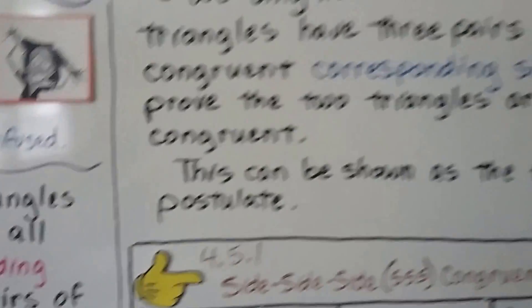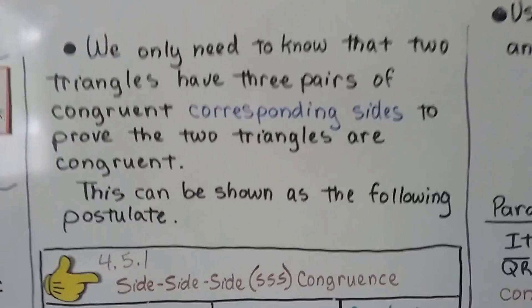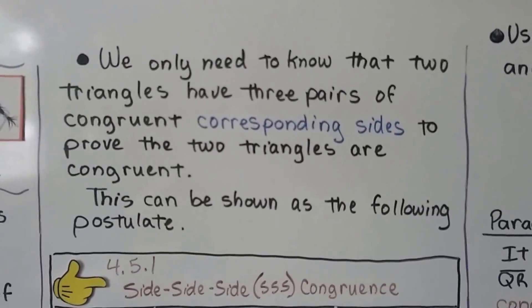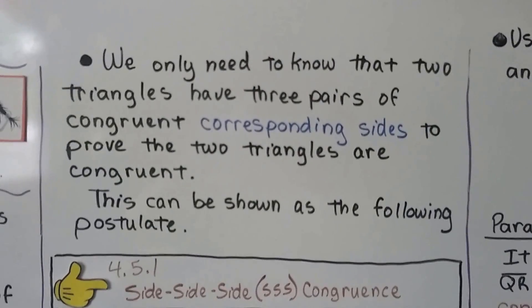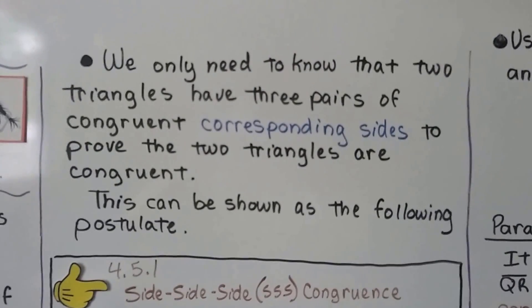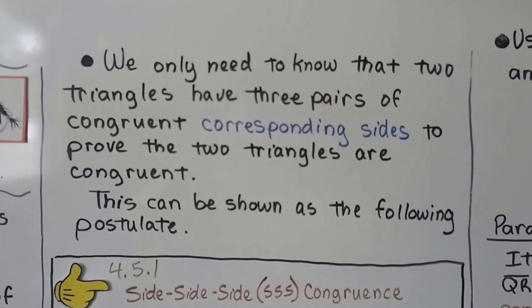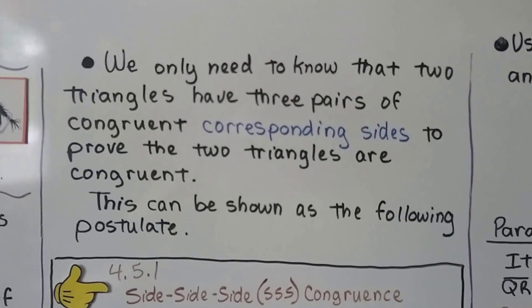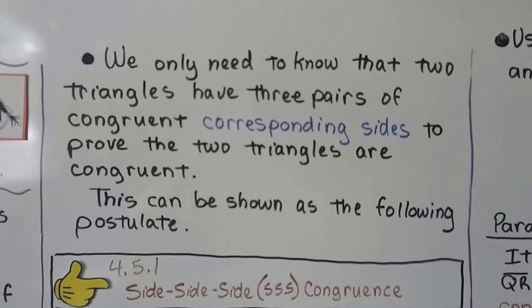So we only need to know that two triangles have three pairs of congruent corresponding sides to prove the two triangles are congruent. We don't have to also have the corresponding angles. We can just do the sides.